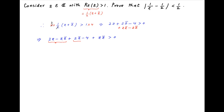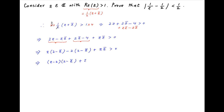Now, combine the first and second terms and the third and fourth terms respectively. On the left-hand side, we get z times (2 minus the conjugate of z), minus 2 times (2 minus the conjugate of z), plus z times the conjugate of z, is greater than 0. This implies that (z minus 2) multiplied by (2 minus the conjugate of z) plus z times the conjugate of z is greater than 0.